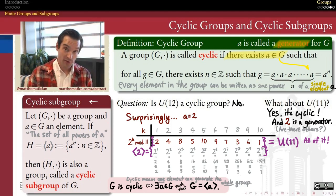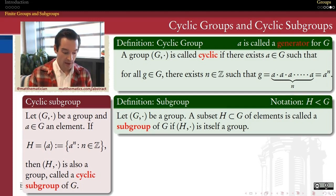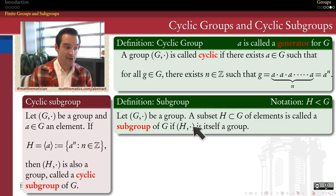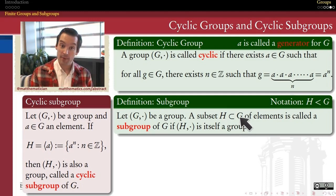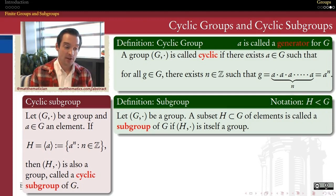Now that we've seen examples of cyclic subgroups, let's get the general definition on the table. A subgroup more generally is any subset of elements of a group that itself forms a group under the same operation as the larger group — satisfying associativity, closure, identity, and inverses. The notation we use when H is a subgroup of G is slightly different from the subset symbol. The subset symbol just means all elements of H are elements of G, whereas the subgroup notation means additionally that H meets the criteria to be a group in its own right, with its operation inherited from G.